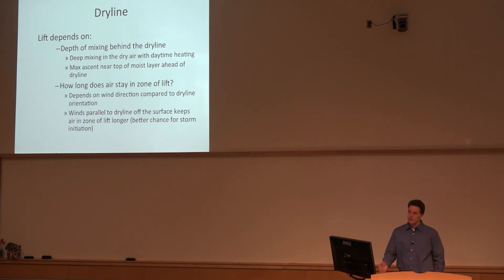The other thing that's critical is how long do the storms stay in the zone of ascent because it's not very wide. We're only talking 10, 20 kilometers maximum. It's not going to persist for a long period of time, so we've got to keep the air parcels in that zone of ascent, which depends on the flow relative to the dry line. So you want the low tropospheric flow to parallel the dry line to keep the updrafts in that zone of ascent, and the longer the better.